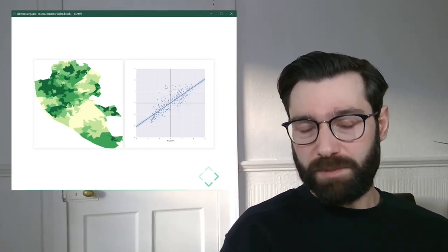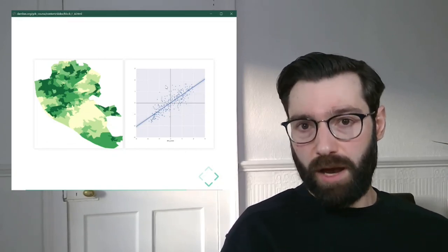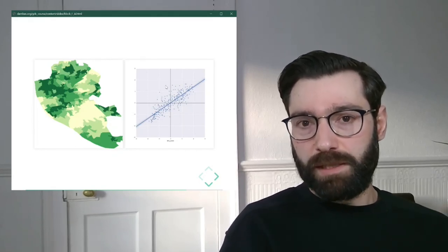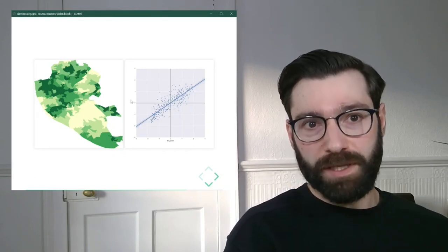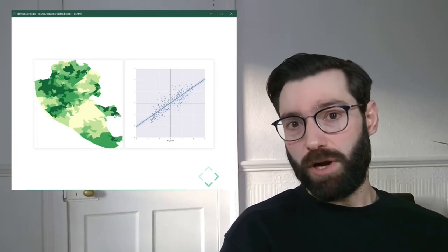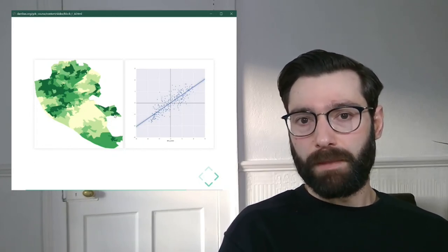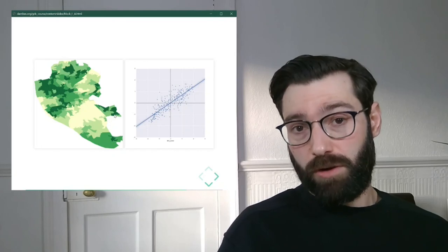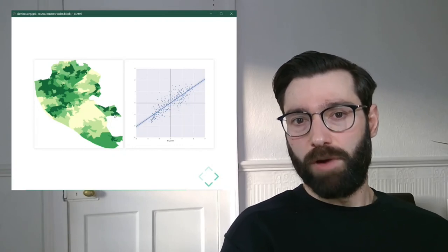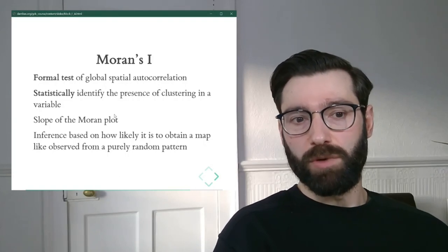Once we have that distribution of values for Moran's I with our geography and our variable capturing spatial randomness, we compare the one we observe with that distribution of random values, and we try to see to what extent we have evidence for non-random patterns. This is something that you can explore more in the hands-on part of the course, and you'll get a better intuition once you play with code to see what happens.